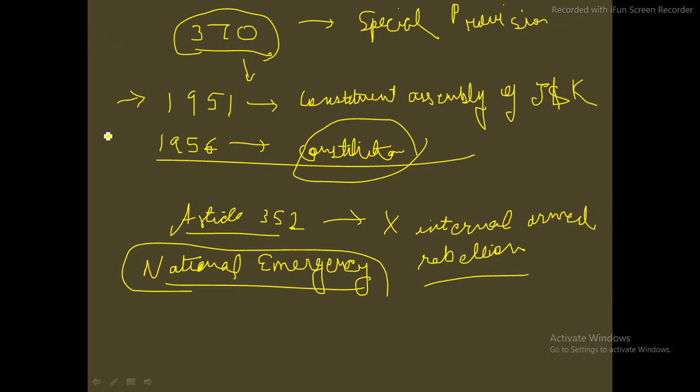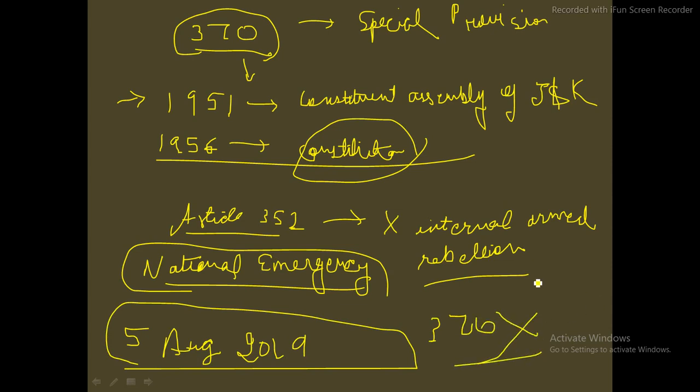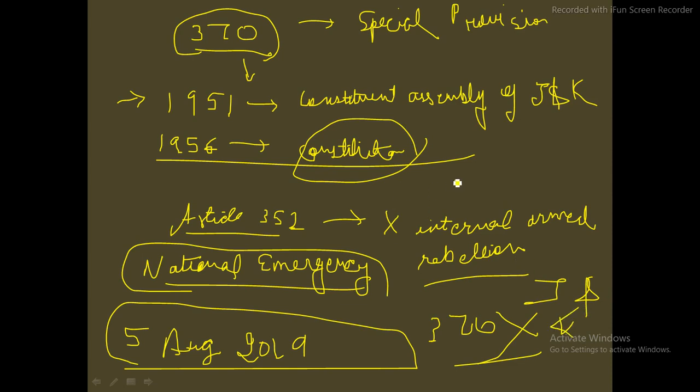On 5th August 2019, a historic day, Article 370 was withdrawn. Jammu and Kashmir was provided the status of a Union Territory, and Ladakh was separated as another Union Territory from J&K. This provision was passed by both houses of parliament and has been implemented. A separate video will be created explaining how Article 370 was withdrawn and the full process.